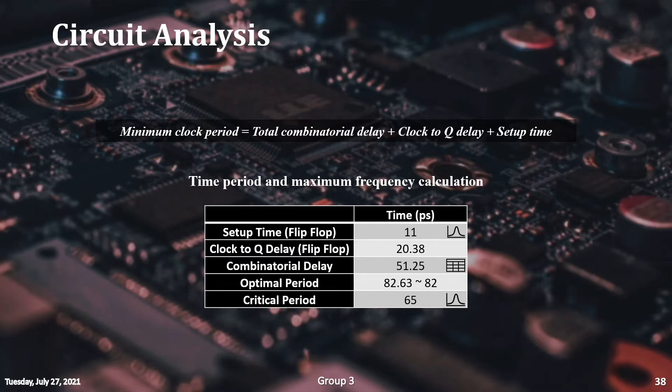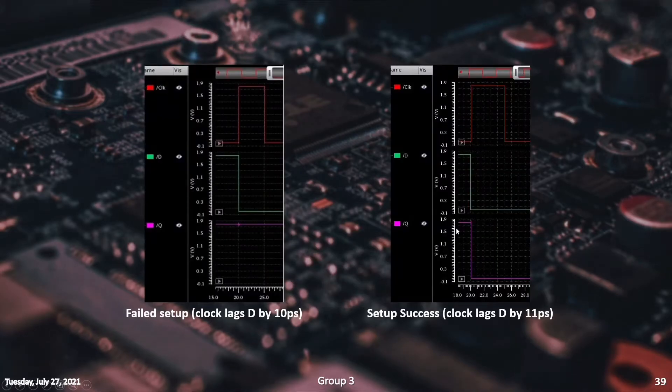Now, it's time to take a look at the performance metrics of our CLB design. This table contains a summary of the minimum period required by the design for proper operation. First, we measure the flip-flop setup time. Keeping the D input unchanged, we delay the positive edge of the clock signal. The minimum delay time that allows the output to follow the input is taken as the setup time, which in our case is 11 picoseconds.